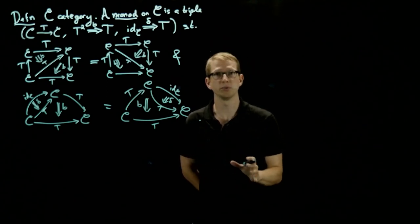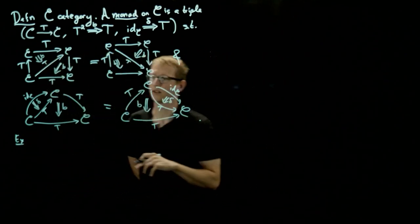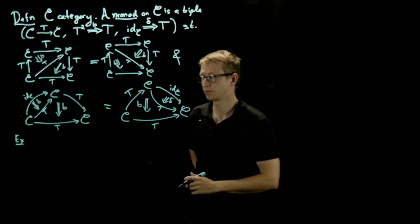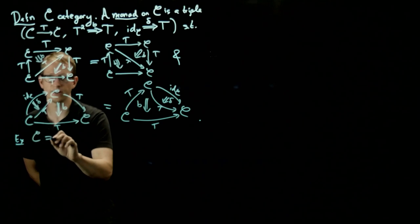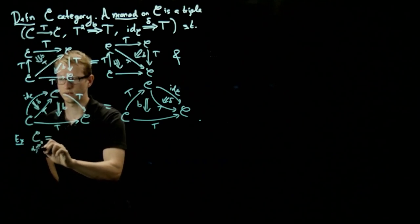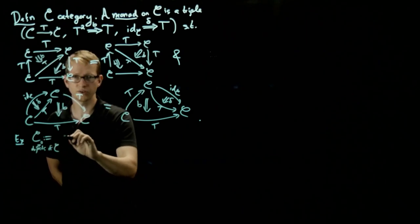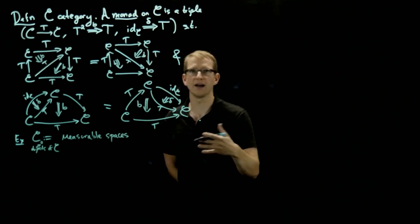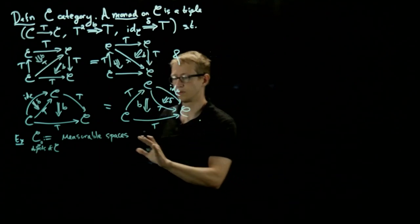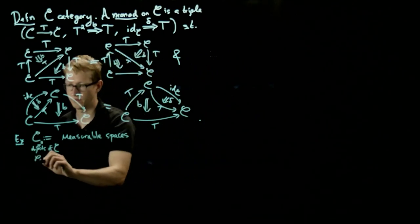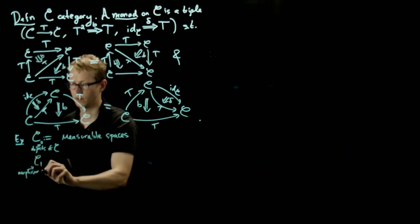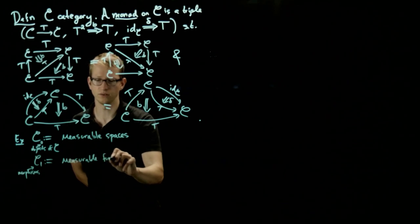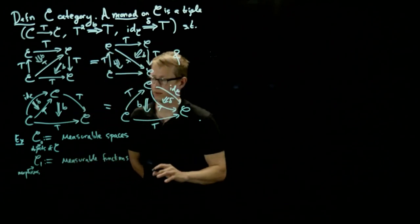It's going to be very helpful if we go through an example to see what all of this means. The only slightly unfortunate thing about this example is that you do need to know a little bit about measure theory, which I'm going to assume you know for this video. So let's take C to be the category whose objects are measurable spaces — sets equipped with sigma algebras, not necessarily measures. And the morphisms of this category are going to be measurable functions.